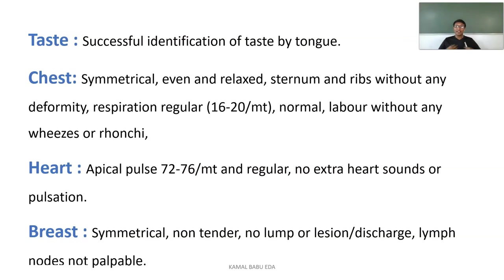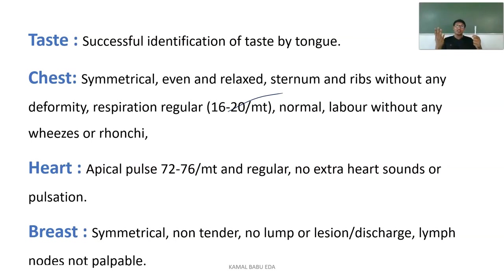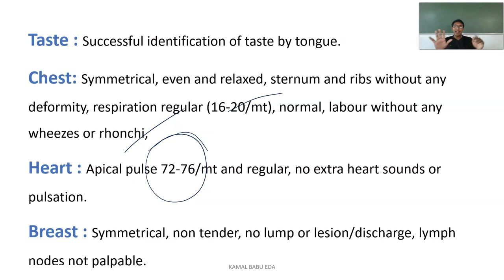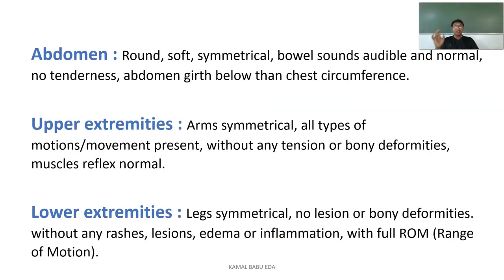The chest should be symmetrical, even, and relaxed, with the sternum and ribs without deformity. The normal respiratory rate is 16 to 24 breaths per minute; there should be no wheezes or ronchi on auscultation of lung sounds. The apical pulse should be 72 to 76 beats per minute with regular rhythm, no extra heartbeats or abnormal pulsations. The breast should be symmetrical with no lump, lesion, or discharge, and lymph nodes should not be palpable. The abdomen should be round, soft, and symmetrical with audible and normal bowel sounds, no tenderness, and abdominal girth below chest circumference.